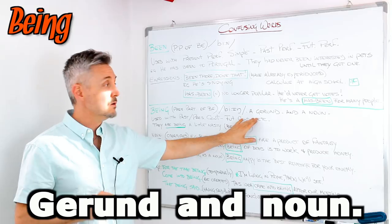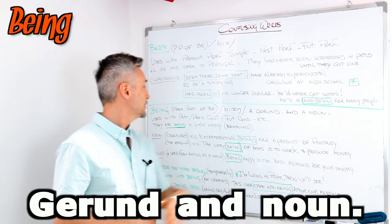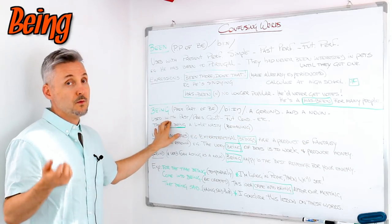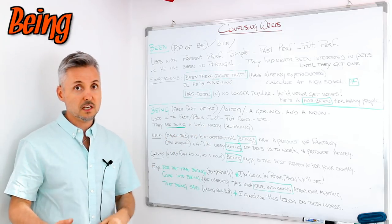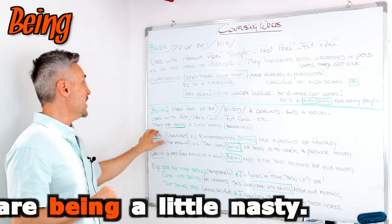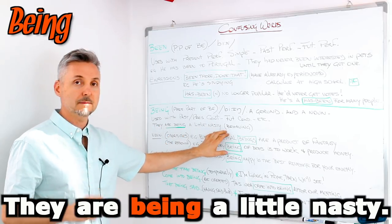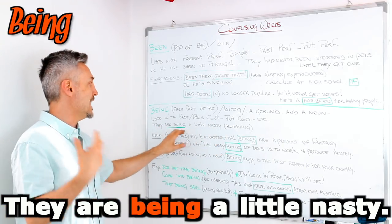So it's a gerund also, and it's a noun. Used with the past and present continuous, future continuous, etc. They are being a little nasty. So they are behaving in a nasty way.